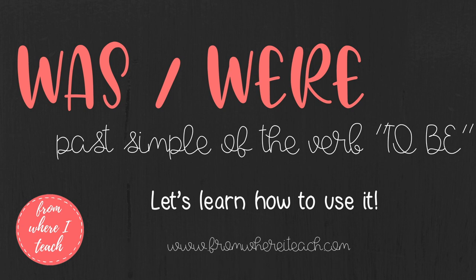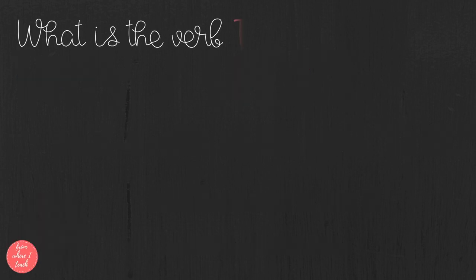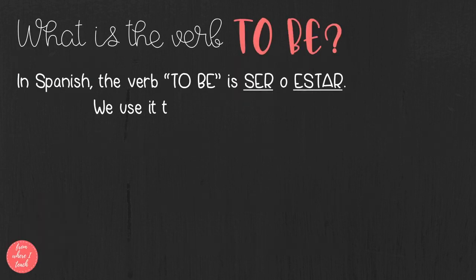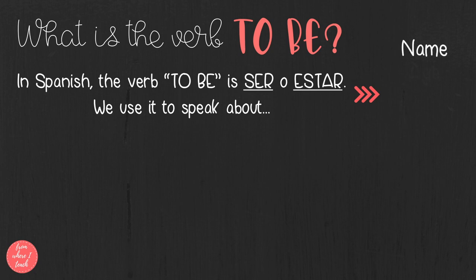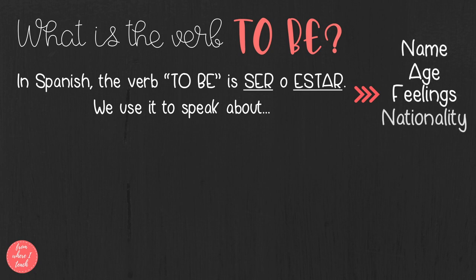The past simple forms are was and were. Let's start by revising what the verb to be is. In Spanish, the verb to be is translated as ser o estar, and we use it to speak about name, age, feelings, nationality, and profession.